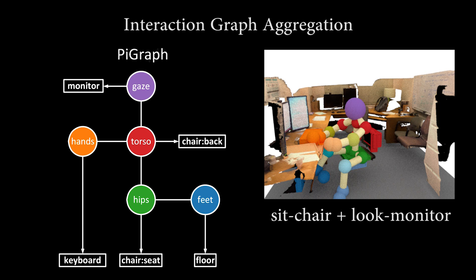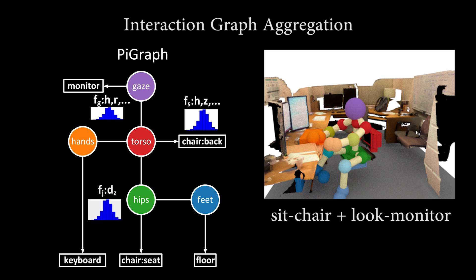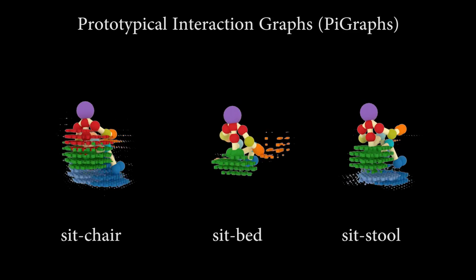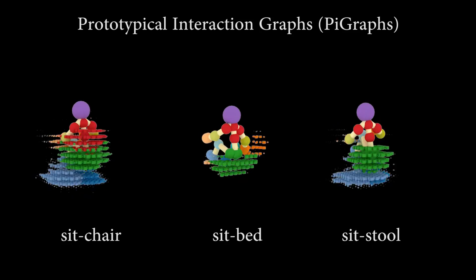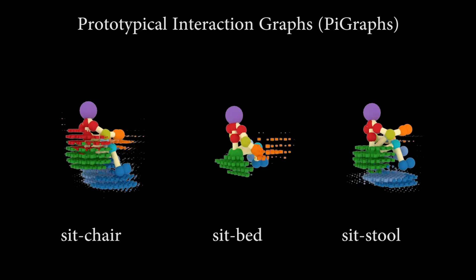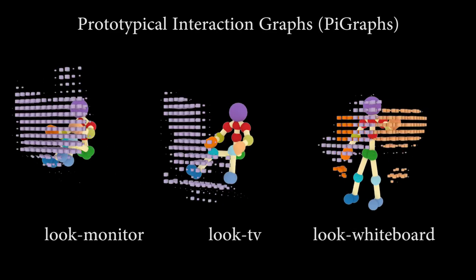These interaction graphs are aggregated into a piegraph to build priors on geometric features, body parts, and contact linkage features. Here are some learned priors containing average poses for each action and colored voxels indicating geometry in contact with each color-coded body part.